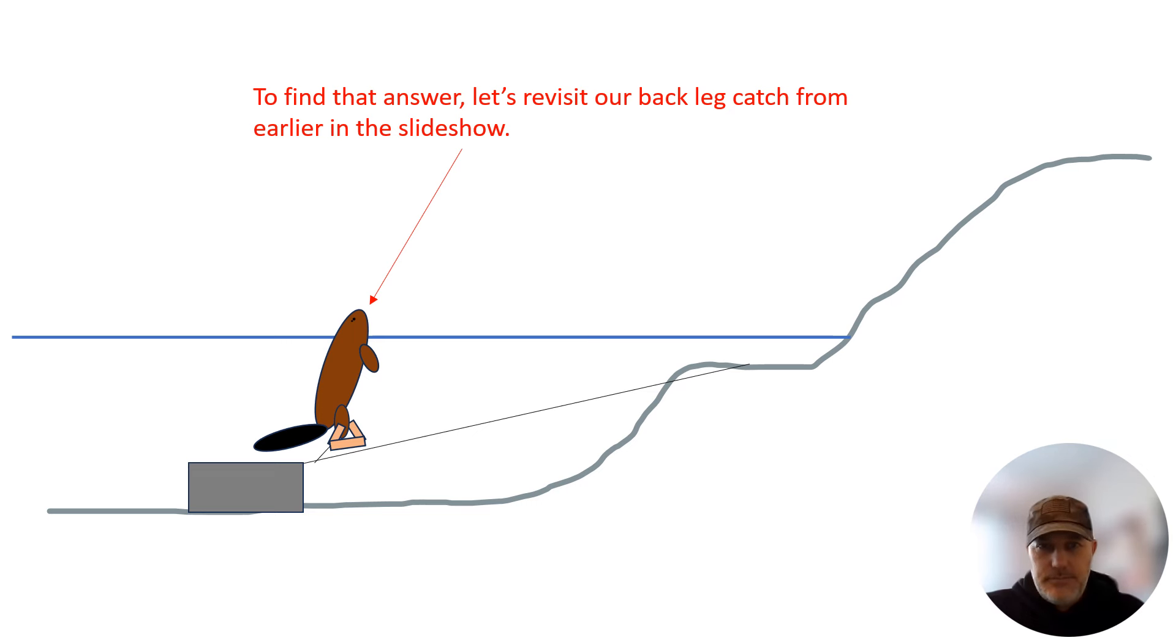Once I caught a 50-pound beaver and it pulled a cinder block onto the shore. The downside to this is that now you have to dispatch your catch. This adds holes to your pelt and that kind of negates why we're using drowning sets in the first place. Not to mention it really increases your chances that predators can get to your catch before you do.